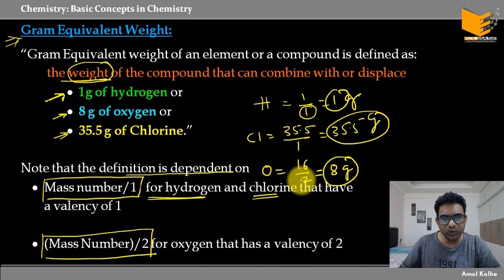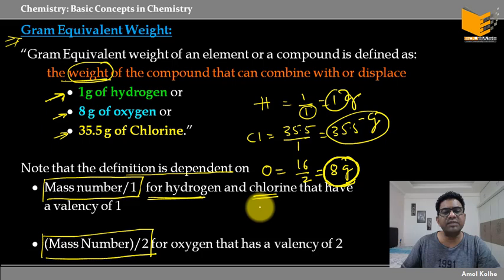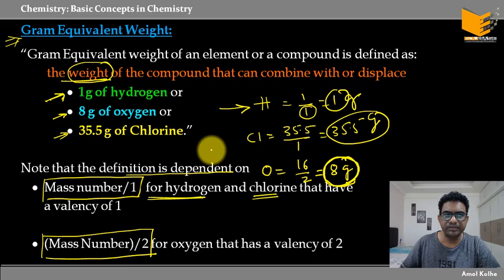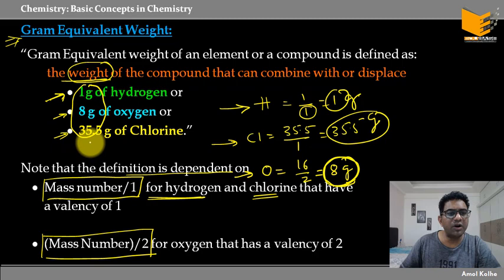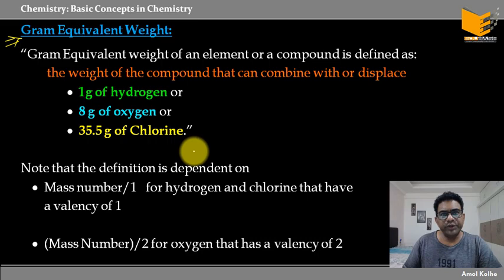Oxygen की valency 2 की है, इसलिए 2 से divide कर रहे हैं। तो अगर कोई element या compound oxygen के 8 gram से react करता है, तो जो mass of compound react कर रहा है, that is going to be its equivalent weight. You can say hydrogen का equivalent weight 1 है, chlorine का 35.5 है, और oxygen का equivalent weight 8 grams है। These are basically the equivalent weights of those particular elements.